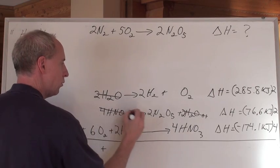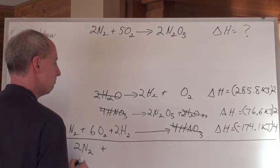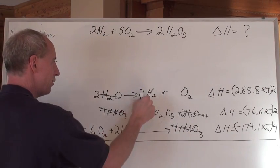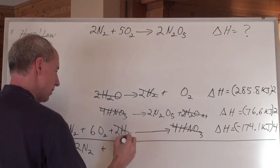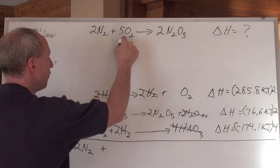The two H2Os cancel the two H2Os. Good. The four HNO3s cancel with four HNO3s. Good. Two H2s and two H2s. Good. Six O2s. I wanted five.